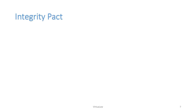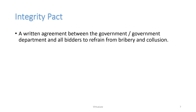An integrity pact is basically a written agreement between a government or government department and the bidders for tenders. There are two parties: the government and the bidder. Since many companies bribe government authorities to ensure a tender comes their way, this agreement is one whereby both parties agree to refrain from bribery and collusion.